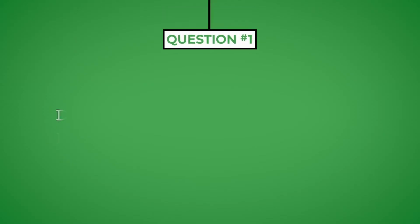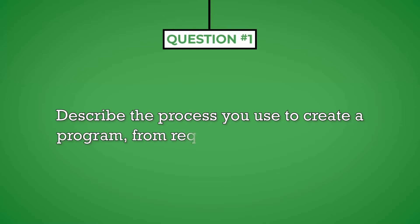Question number one: describe the process you use to create a program from requirements to delivery. When the interviewer asks you to describe a process, they are seeking to understand how you go about doing your job. You should review the job description to fully understand the position requirements and how the organization will expect you to do your job. You should also review the processes you currently use to ensure they align with the role's requirements. Your answer should describe each step of the process in a sequential manner. Make sure to keep your response simple and to the point.